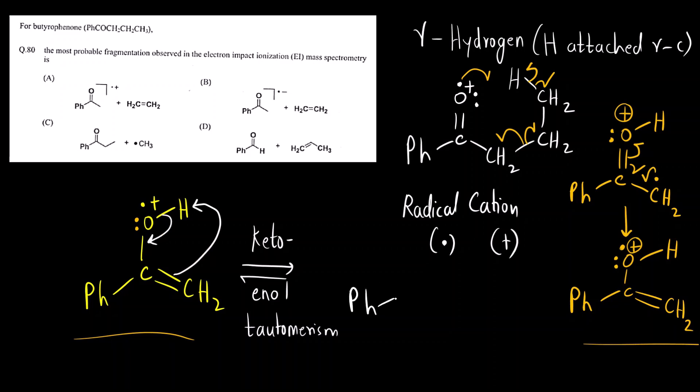So what we will get? Ph-C double bond O, oxygen having one lone pair, radical plus charge and CH3. This same ion what they have written is they have removed all the lone pairs. They have added a square bracket and outside the bracket we write radical and cation. Plus which was other molecule that was formed? Ethene.